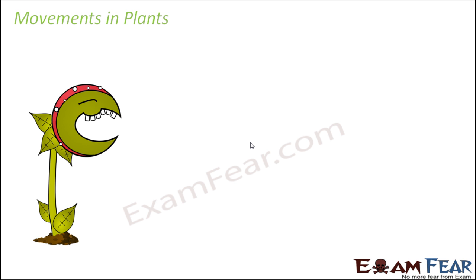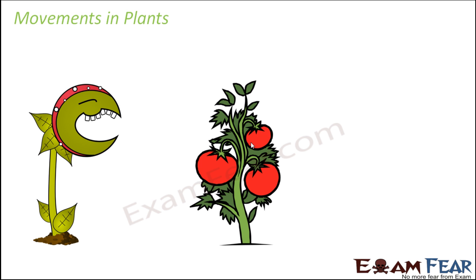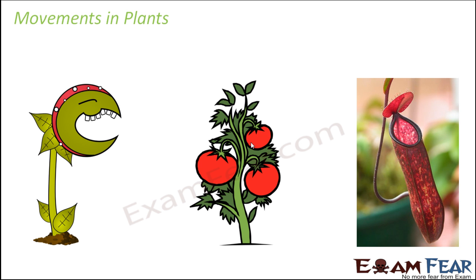Now if you think of plants — even plants do move. However, we do not see them moving from one place to another; locomotion is not really seen in plants, but plant parts do exhibit movements. There are many examples where you can actually observe the movements of plants. One such example is the touch-me-not plant.